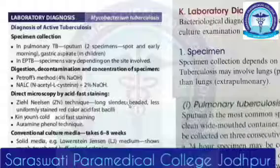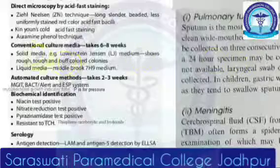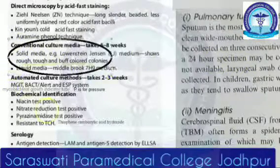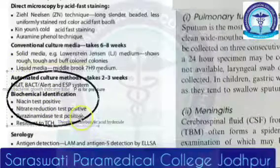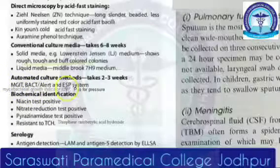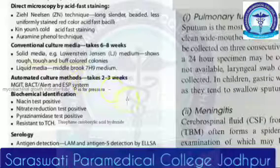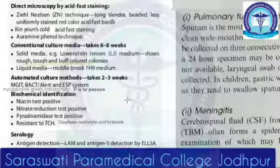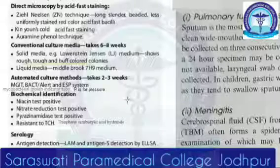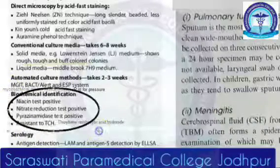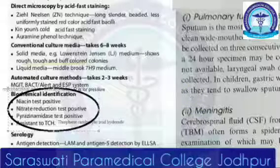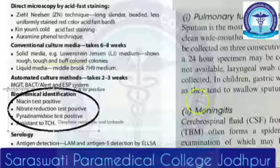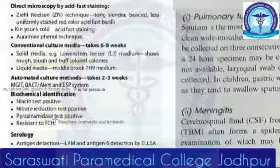Other staining methods include Kinyon's cold acid-fast staining or auramine phenol. Then you have conventional culture on solid media — the Loewenstein-Jensen media — plus liquid media. Automated culture methods: remember MGIT (Mycobacterial Growth Indicator Tube), BacT/Alert, and the ESP system. Then biochemical identification: niacin test, nitrate reduction test, pyrazinamidase test, and resistance to TCH — thiophen carboxylic acid hydrazide.